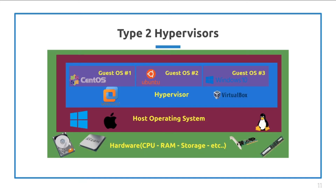Now onto the design of type 2 hypervisors. It begins with the hardware and then the host operating system, such as Windows 10 Home, Mountain Lion Mac OS, or Ubuntu Linux. On these operating systems, you can install virtualization software that can create more virtual machines. Two free commonly used virtualization software are VMware Workstation and Oracle's VirtualBox. From these hosted hypervisors, you would be able to create more virtual machines — the first one can be CentOS, the second can be Ubuntu, and the third can be Windows 10.